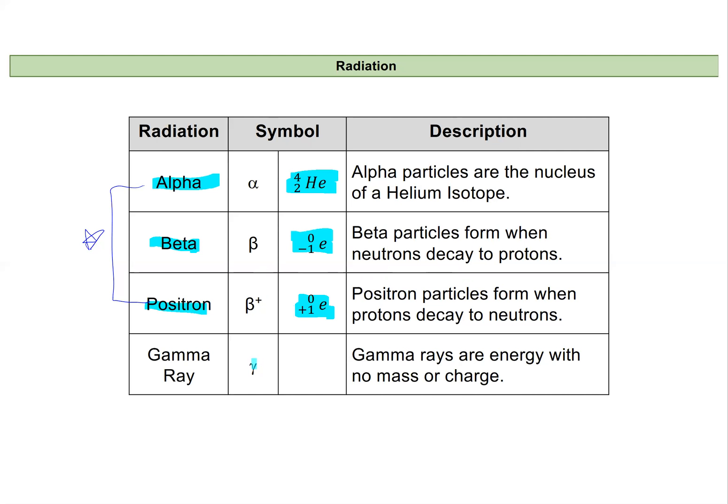And then we have gamma rays, and gamma rays are just energy. So there isn't a particle associated with gamma ray radiation. And so I would like you to be able to, if given these words, recognize what it is that is going to be emitted from your nucleus of your radioactive isotope.